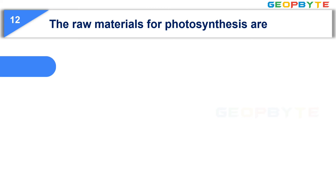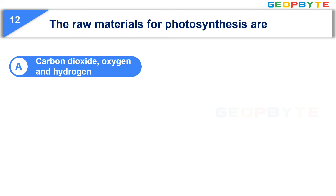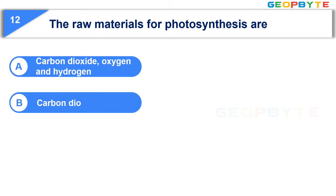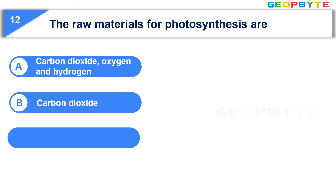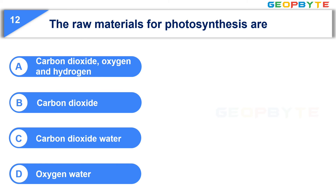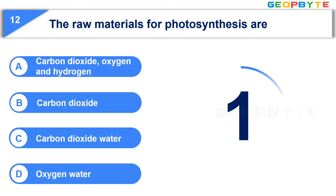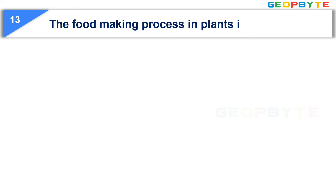Now let us see the next question: The raw materials for photosynthesis are — Option A: Carbon dioxide, oxygen, and hydrogen. Option B: Carbon dioxide. Option C: Carbon dioxide and water. Option D: Oxygen and water. Your time starts now. Your time is up and the correct answer is Option D: Carbon dioxide and water.